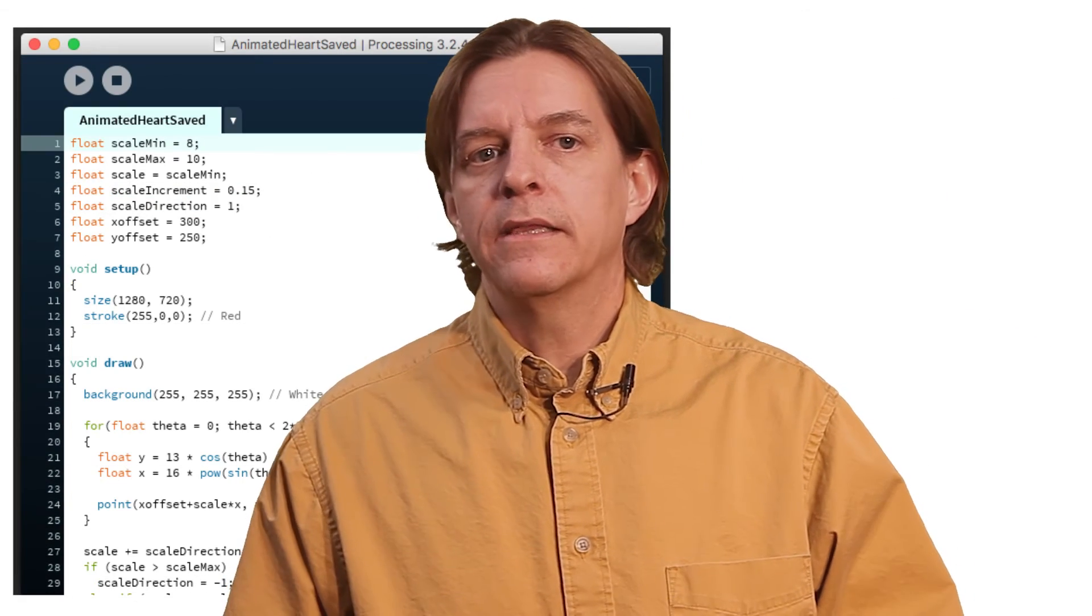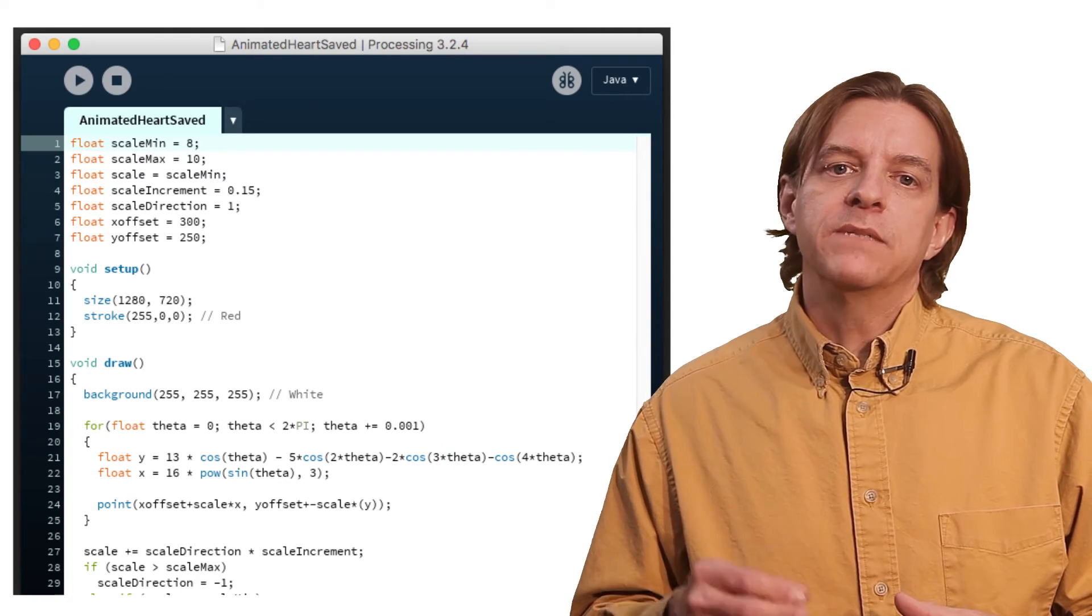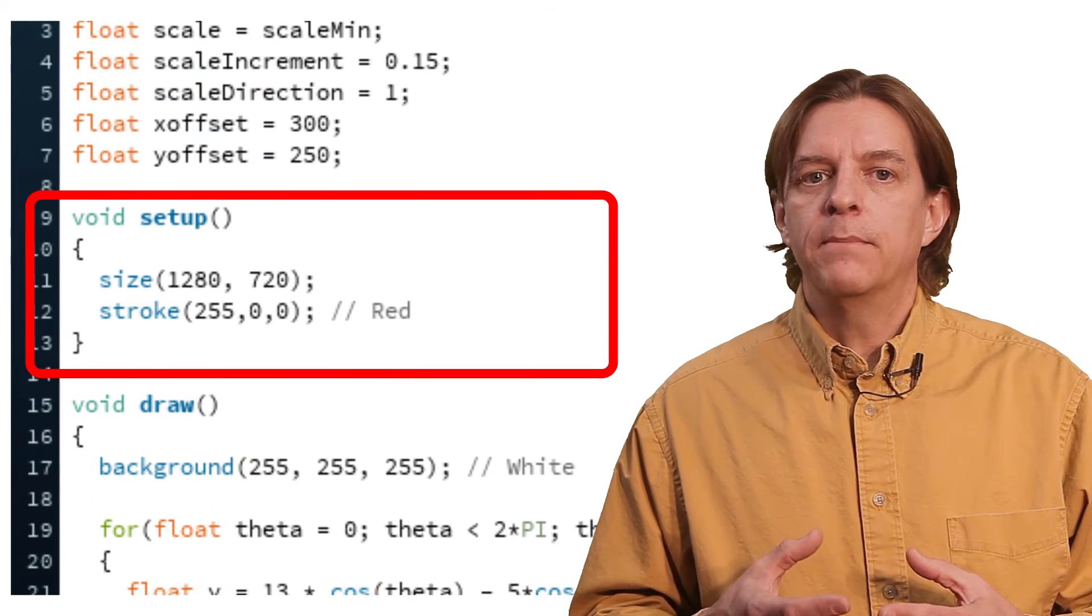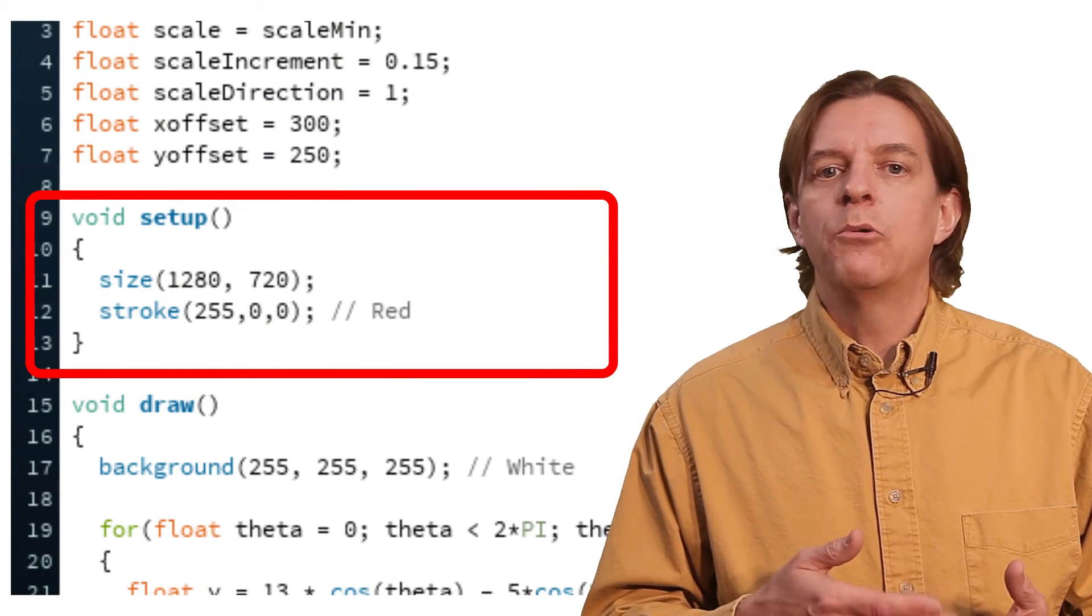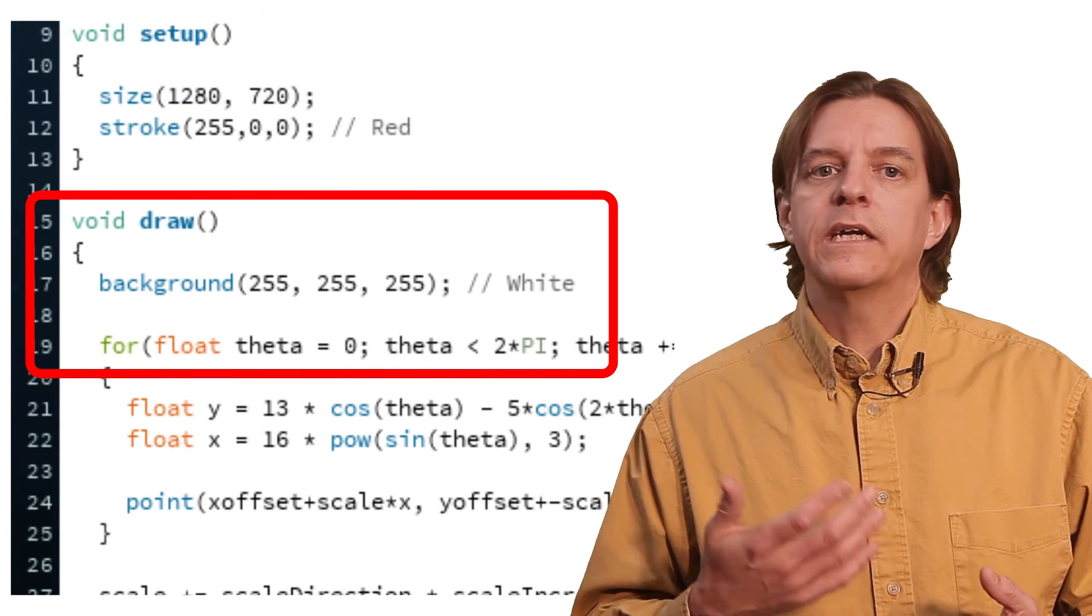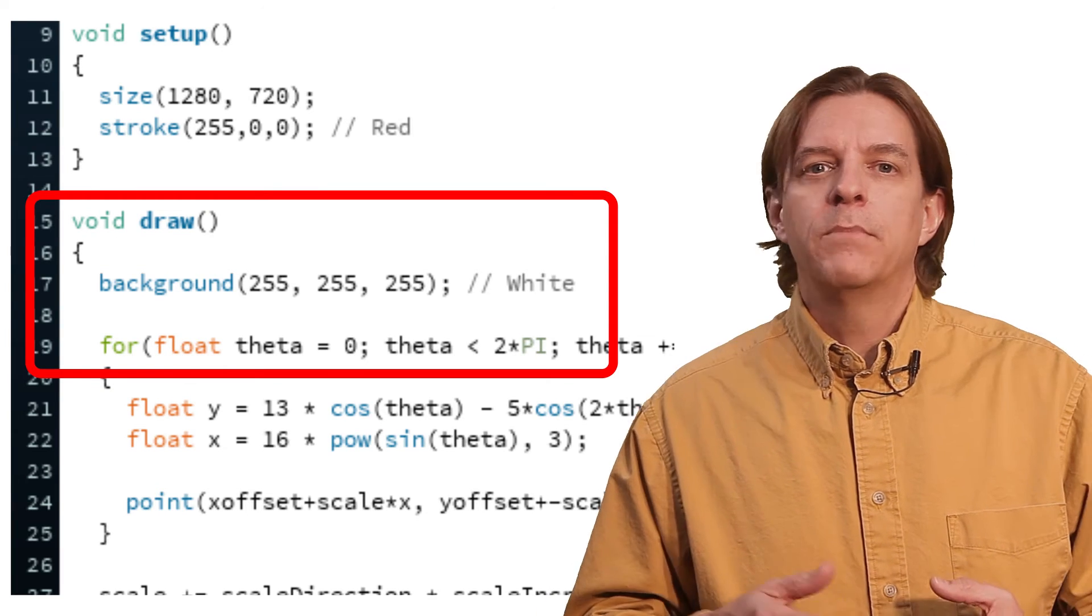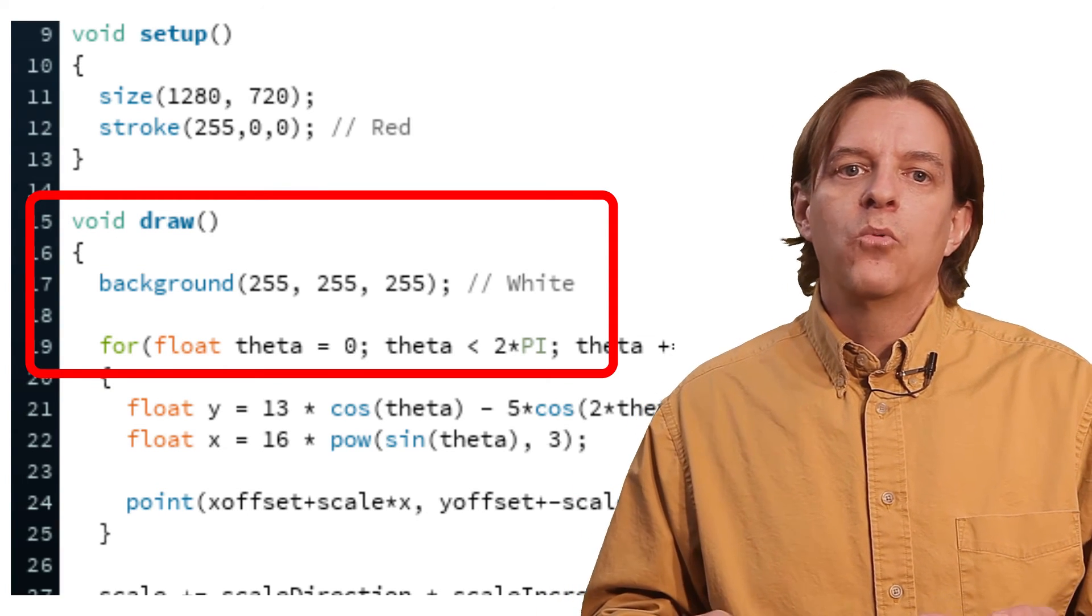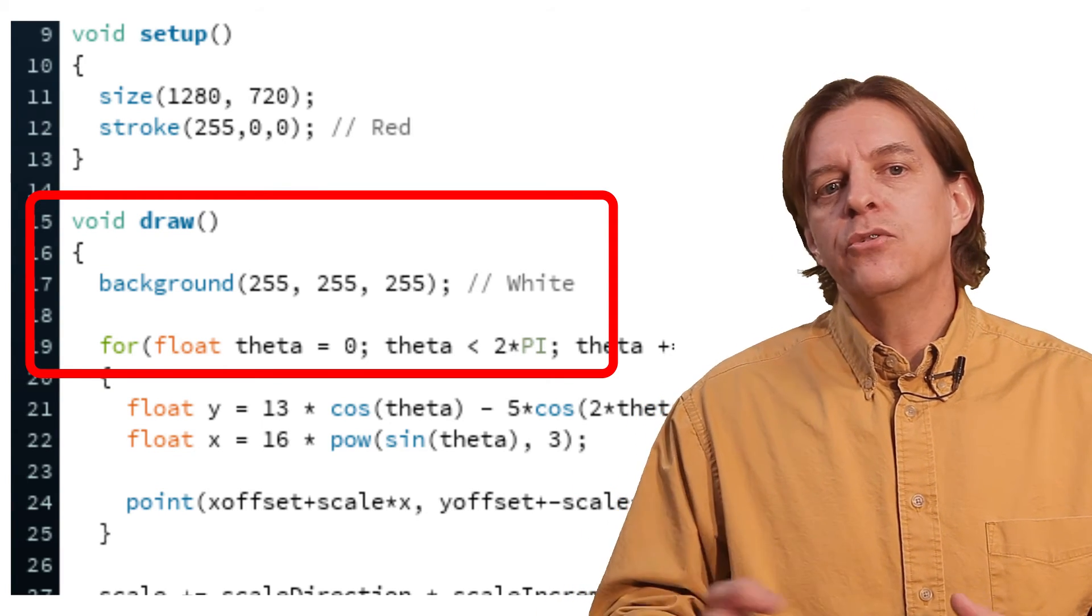One of the cool things about the processing environment is it works well for animating things. If we put the statements before the loop in a function called setup, it will get called one time when we run our program. Then, if we put the loop inside a method called draw, it will get continually called over and over again. But because we're drawing the same thing over and over, it's not going to be too terribly exciting.